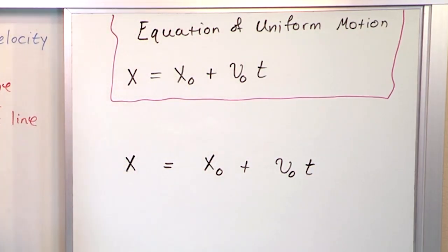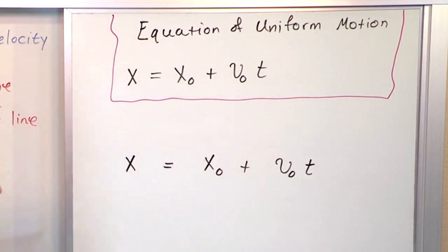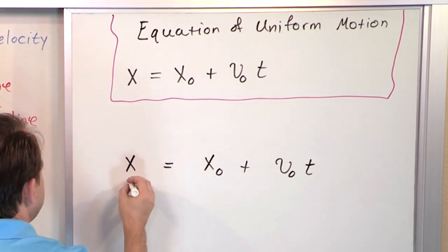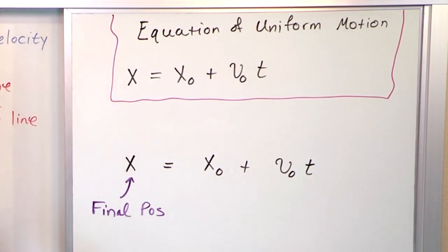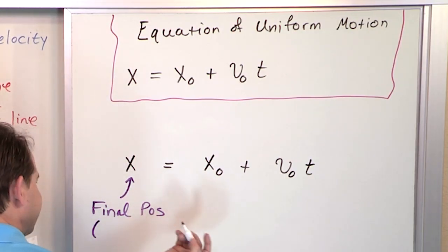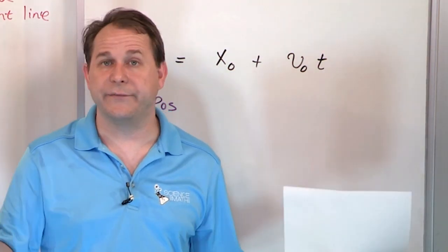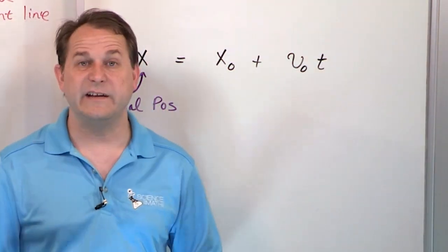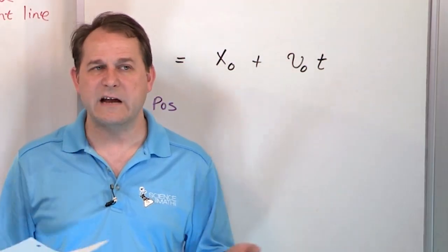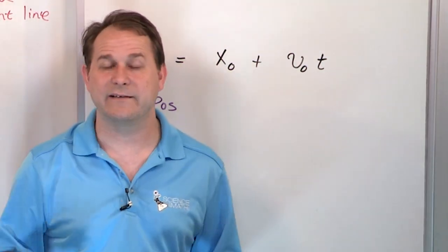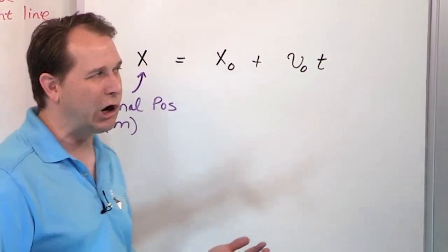Let's figure out what this equation is really telling us. X — the final position — is what we're trying to find. The units of position are meters. So x is basically: when we finish our motion, where did it end up? Was it 5 meters away — then x would be 5. Did it end up 17 meters away — then x would be 17. And if x ended up being negative 3, it just means it went 3 meters in the negative direction. X can be positive or negative.